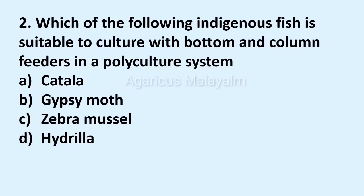Second question: which of the following indigenous species is suitable to culture with bottom and column feeders in a polyculture system? Answer options: option A, katla; option B, gypsy mok; option C, zebra mussel; option D, hydrilla. Correct answer: option A, katla.